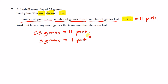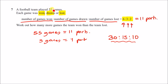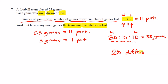Multiply each ratio part by 5: won is 6 times 5 equals 30 games, drawn is 3 times 5 equals 15 games, lost is 2 times 5 equals 10 games. Check: 30 plus 15 plus 10 equals 55. The question asks how many more games won than lost: 30 minus 10 equals 20 games difference.